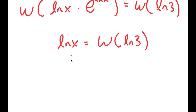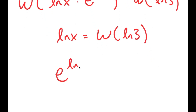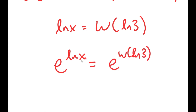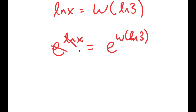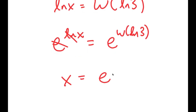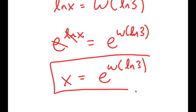I want to get rid of this ln, so I'm just going to take e to the power of both sides. e to the power of ln cancel out, so I get x is equal to e to the power of W of ln of 3. So this is my answer to this equation. Now, if you haven't already, please make sure to subscribe, leave a like, and check out other videos on my channel.